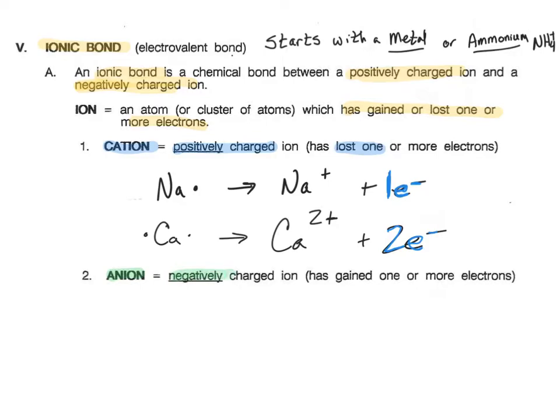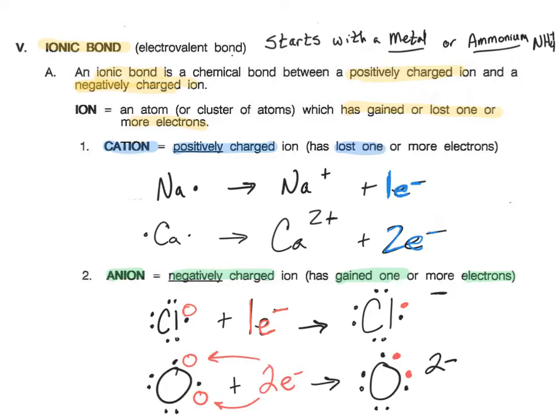Anions are negatively charged ions and those are the ones that have gained one or more electrons. An example might be chlorine, which has one spot left over ready to accept another electron so it becomes negatively charged. Or oxygen, which has two spots left over ready for accepting electrons and gets a negative two charge when it's done.